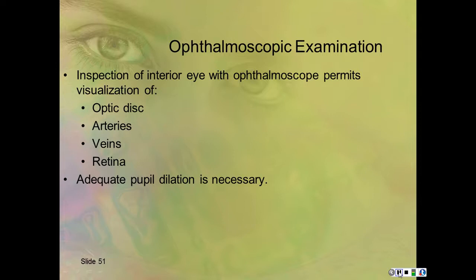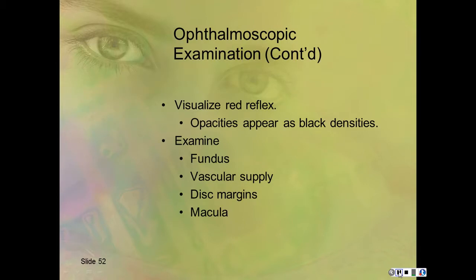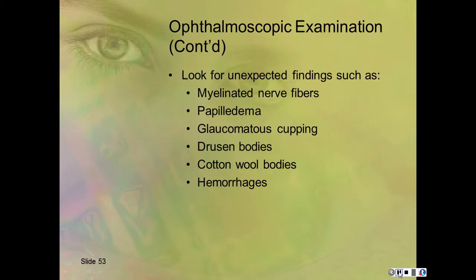For the ophthalmic examination: examine the interior eye with the ophthalmoscope looking at the optic disc, arteries, veins, and retina. Adequate pupil dilation is necessary. Visualize the red reflex—opacities appear as black densities. Examine the fundus including vascular supply, disc margins, and the macula. Look for unexpected findings such as myelinated nerve fibers, papilledema, glaucomatous cupping, drusen bodies, cotton wool bodies, and hemorrhages.